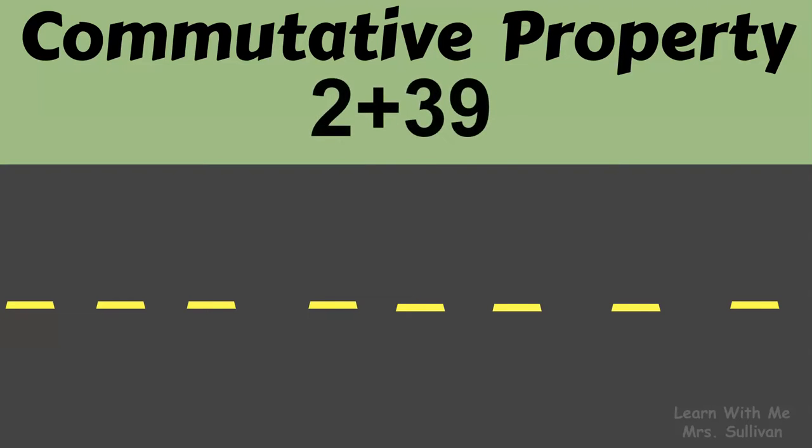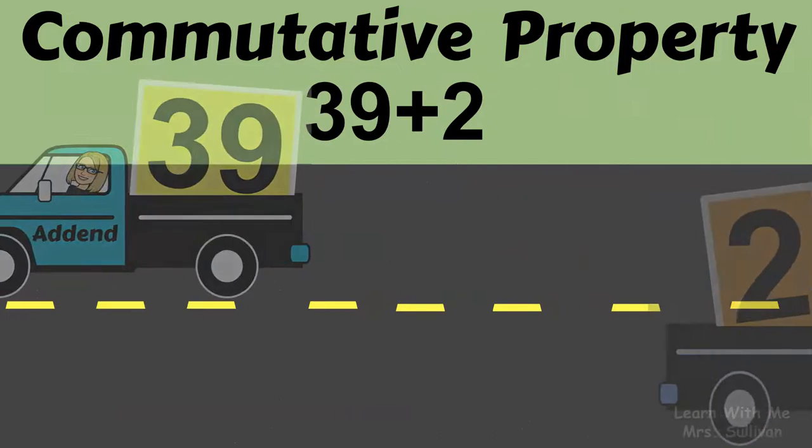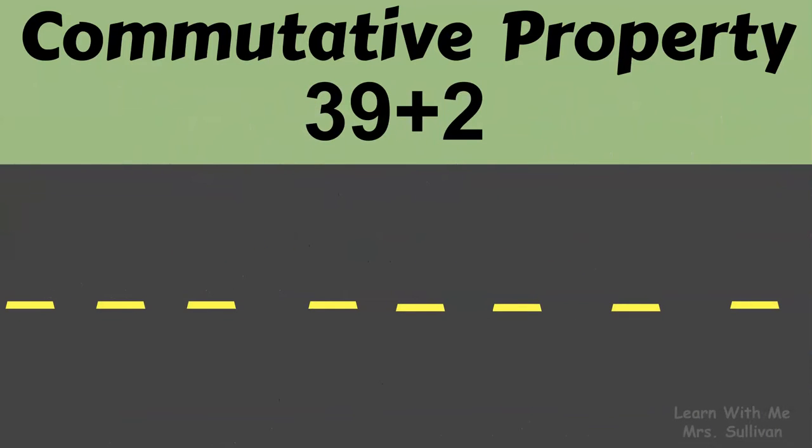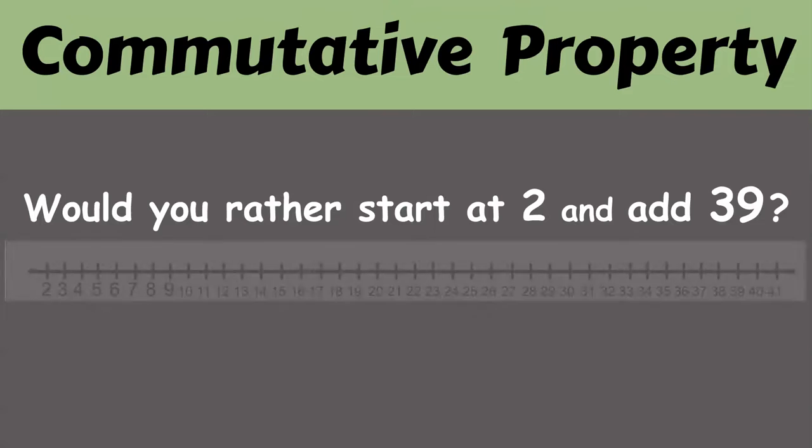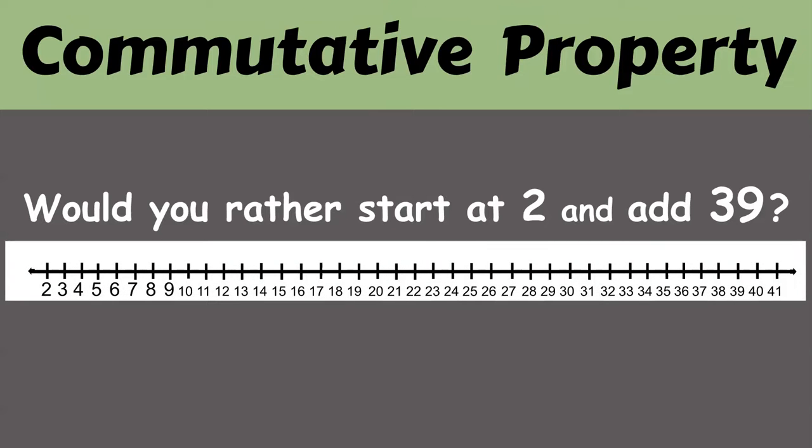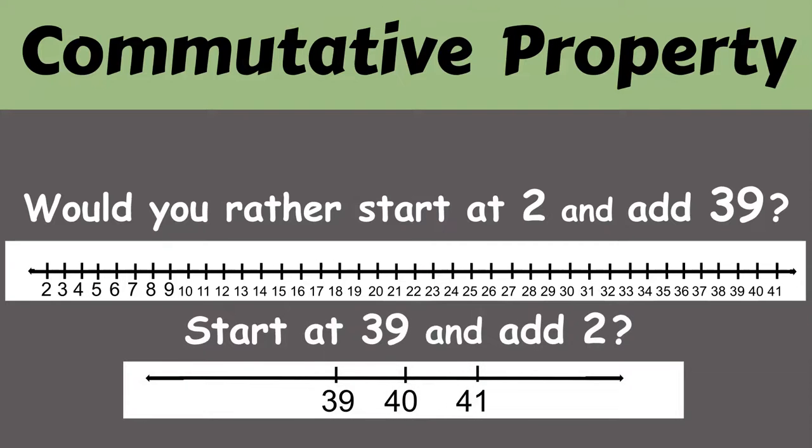Let's look at an example with a larger number. 2 plus 39, which, thanks to the commutative property, can be thought of as 39 plus 2. Wait, why is this important? Well, would you rather start at 2 and add 39, or start at 39 and add 2?